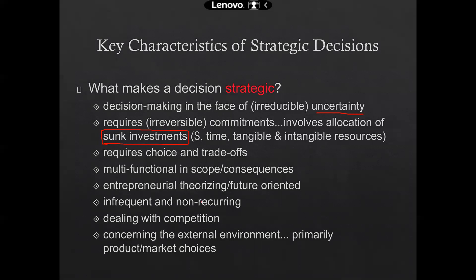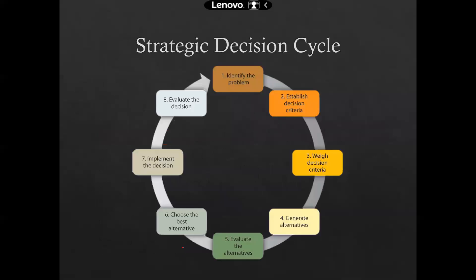A strategic decision is non-recurring. Once you make a strategy and it is not working, you do not jump back to the previous strategy because the previous one did not work either. What you do is find out the possible potential problems in both strategies and make a new strategy. It is obviously a competitive market, so you have to make a strategy to compete. This concerns the external environment and primarily products and market prices.